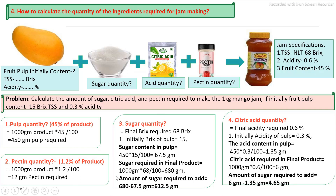In the case of sugar addition, whatever quantity of sugar is calculated, slightly reduce the amount of sugar in order to get the exact final brix requirement, because during the cooking process slight evaporation occurs.